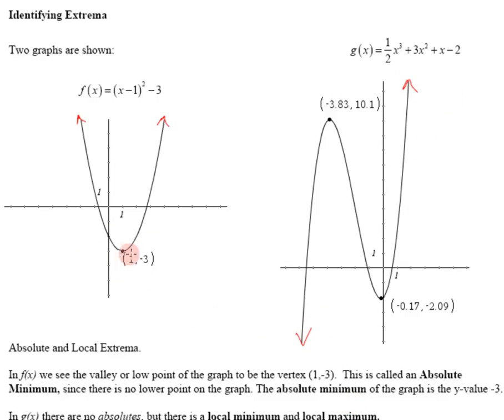Now on this graph we can actually see that there's an absolute minimum. There's a lowest point of this entire graph. So we call that an absolute minimum. And the absolute minimum is what is the lowest point right there. That lowest point is negative 3. So this parabola has an absolute minimum of negative 3.